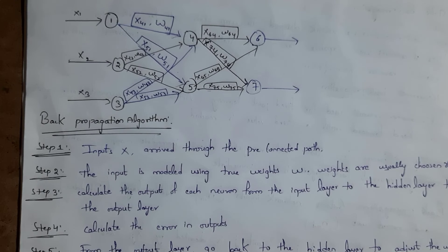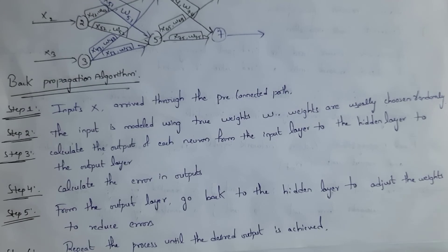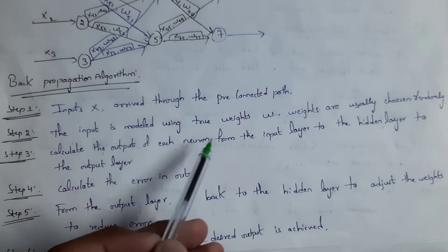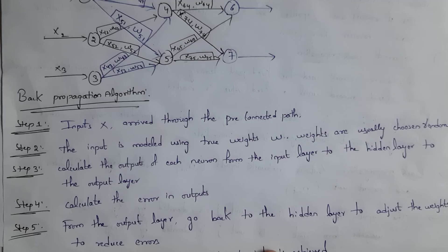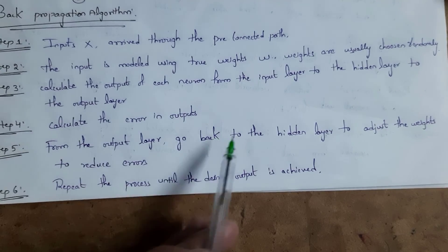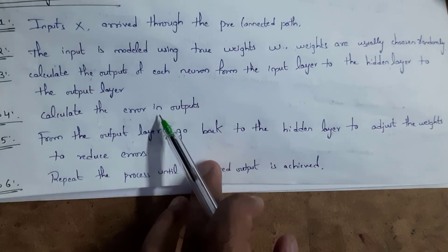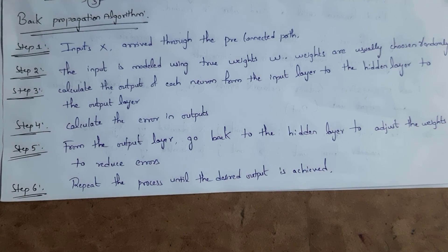Next, backpropagation algorithm. There are six steps in backpropagation algorithm. In step 1, inputs are arrived through pre-connected path. In step 2, inputs are modeled with some weights. In step 3, we need to calculate output of each neuron from input layer to hidden layer and from hidden layer to output layer. In step 4, we need to calculate errors in output. In step 5, from output layer, go back to hidden layer in order to adjust weights and reduce errors. And in step 6, repeat the same process until desired output is achieved.